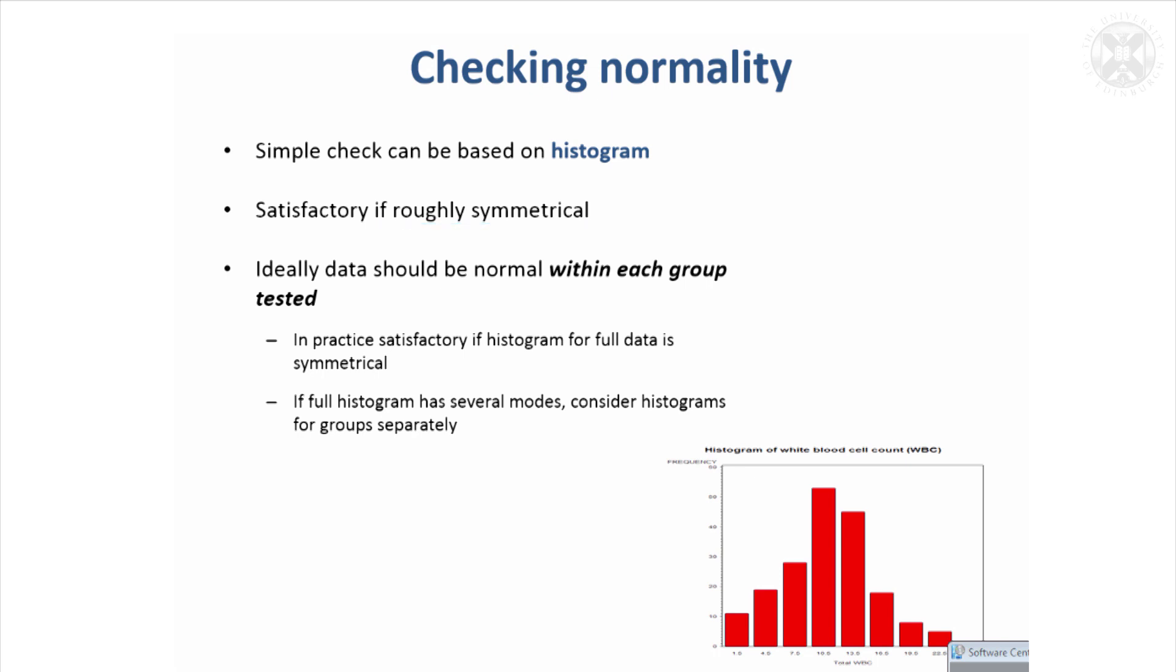You have a choice: you can either do a histogram of all the data, and if it looks symmetrical you're okay. But if it's got two peaks, it's satisfactory if you look at histograms of groups separately. If they're normally or symmetrically distributed, you're okay to assume normality and do parametric tests.